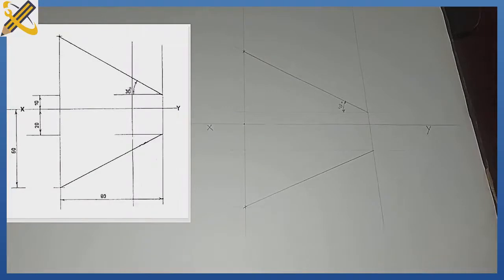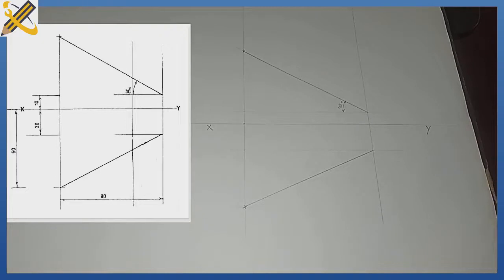Two views of a line are given. We are told to detect the horizontal and vertical traces, get the true angle of inclination to the horizontal plane and vertical plane, and find the true length of that line. The very first thing we are going to do is reproduce the question, which is what you are seeing on the screen right now.